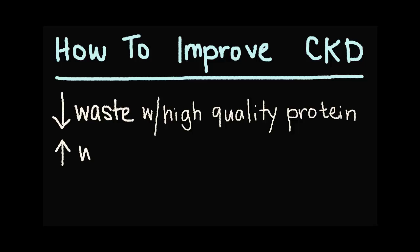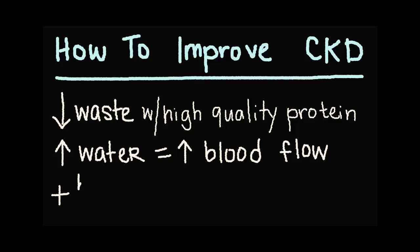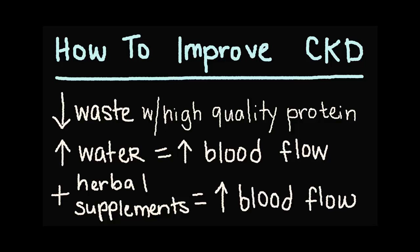We can increase their water consumption to get more blood flow through the kidney so it gets filtered more often. We can also add herbal supplements that help increase blood flow to the kidneys. Increasing blood flow will increase the amount of filtering possible, and this leads to cats that feel better for longer.